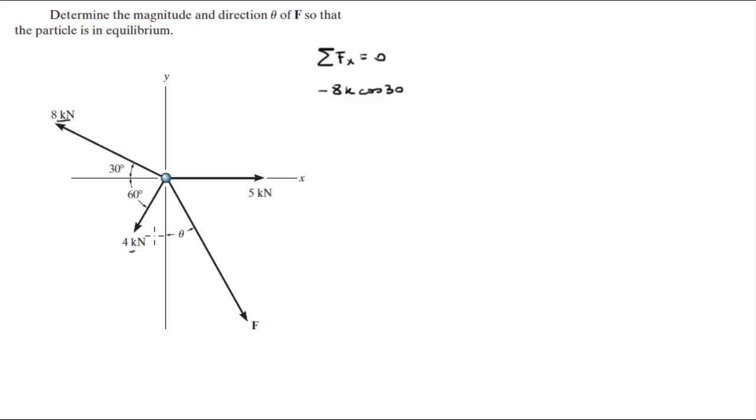The x component of this 4kN force is minus 4k cosine of 60. This 5kN force is pure x component so it's plus 5k. And the force x component is f sine of theta, and all that is equal to 0.